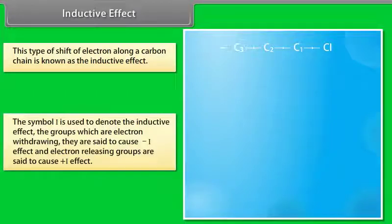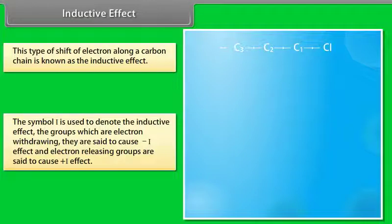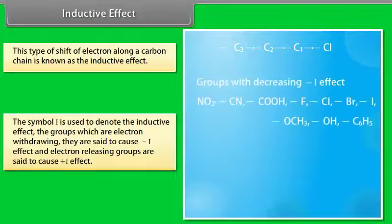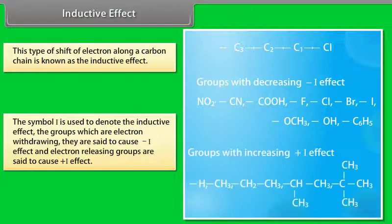The symbol I is used to denote the inductive effect. Groups which are electron withdrawing are said to cause negative I effect, and electron releasing groups are said to cause positive I effect.